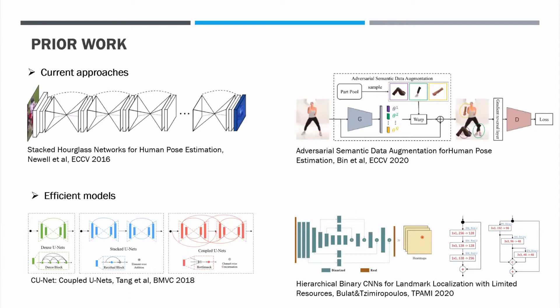Most of the current methods use fully convolutional networks with an encoder-decoder structure that often gradually refine upon an initial prediction. In such cases, the ground-truth landmarks are represented using a set of key heatmaps with a 2D Gaussian centered around the location of the key points. This setting is easier to learn and more natural both for the convolutional network and humans to interpret.